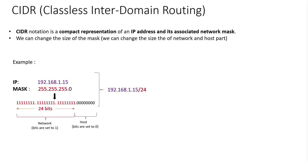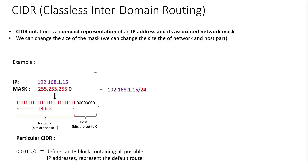In this example, we have an IP and its associated mask. A compact representation of this IP and this mask is the IP followed by /24. The /24 means that we have 24 bits in the mask set to 1. We already know that when a bit in the mask is set to 1, it identifies the network part. Bits set to 0 in the mask identify the host part. I also want to show you a particular CIDR: 0.0.0.0/0. This CIDR defines an IP block containing all possible IP addresses. It also represents the default route.